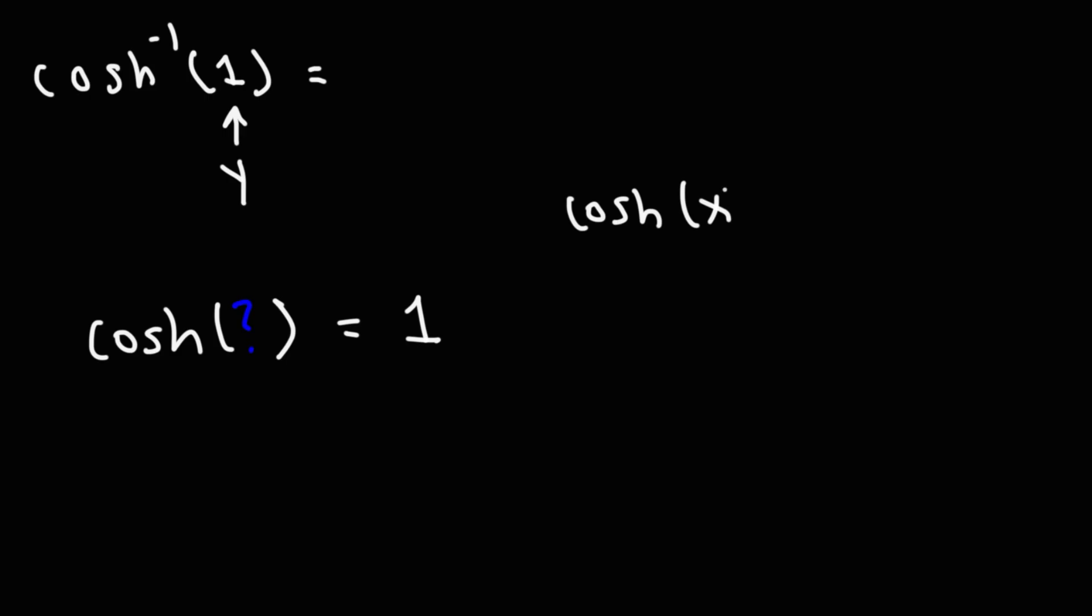Recall the hyperbolic cosine function is e to the x plus e to the negative x over 2. So we could replace this with 1, that's equal to y, and we could solve for x.